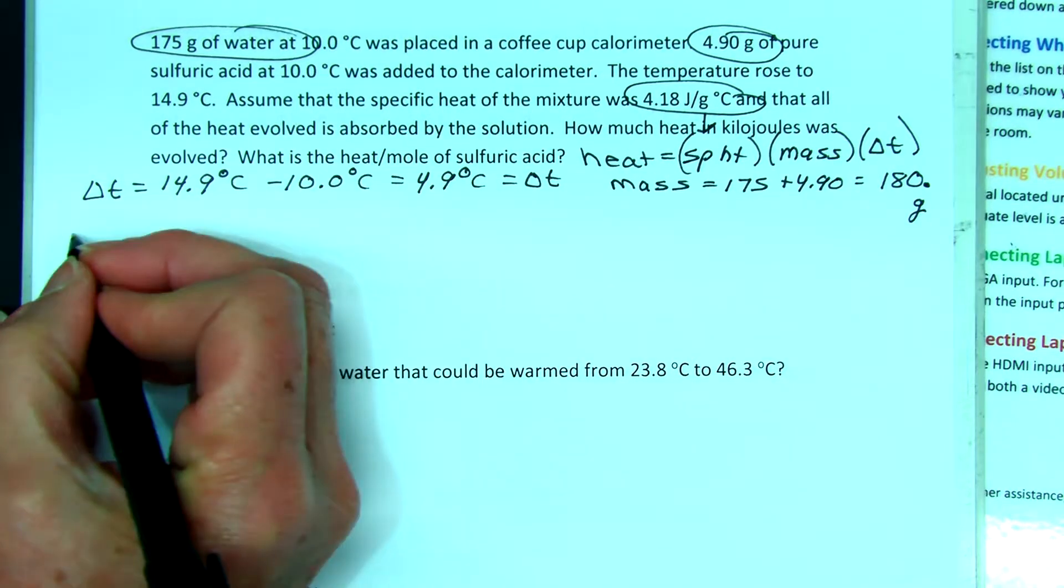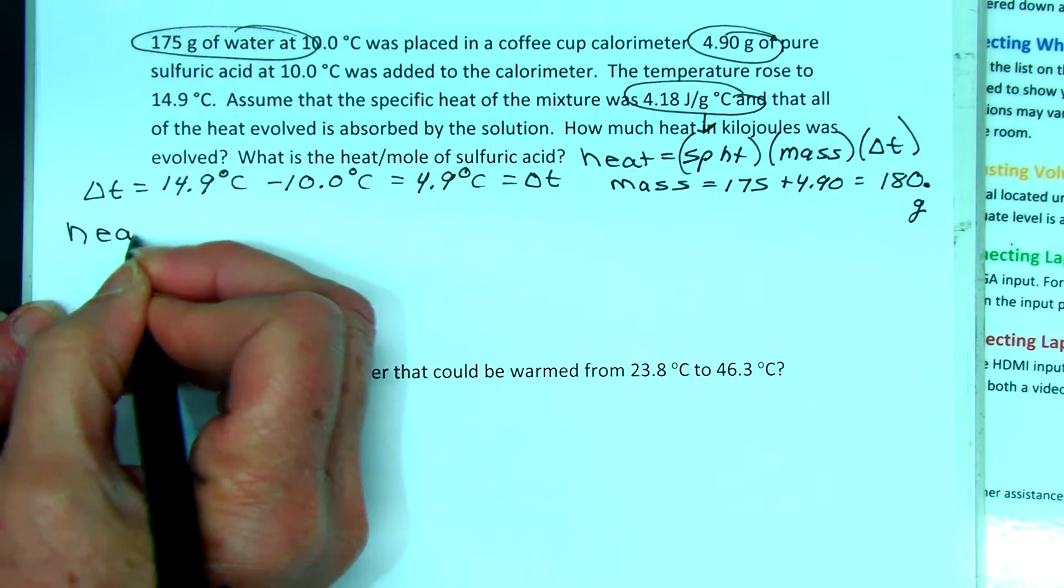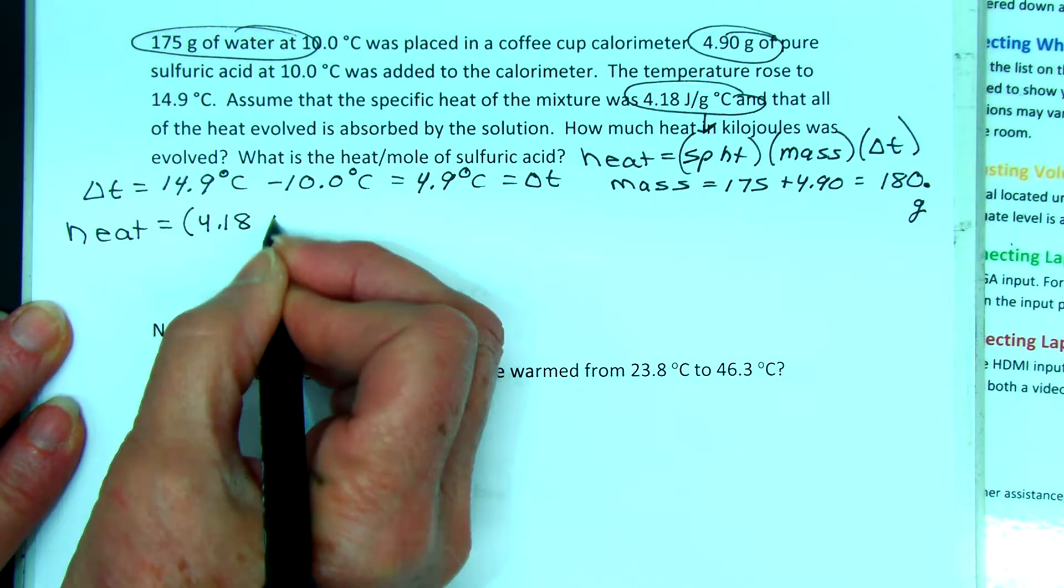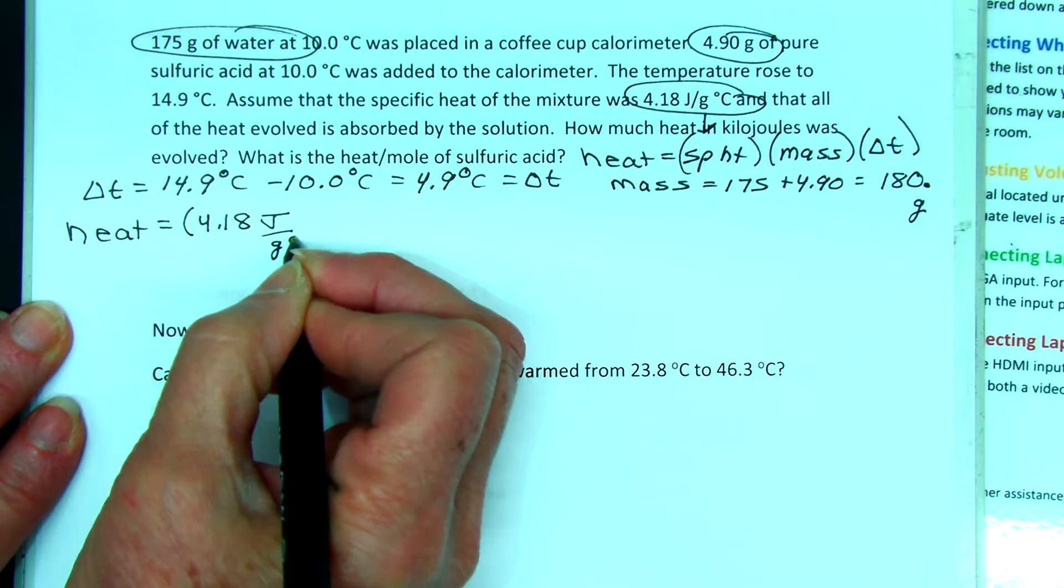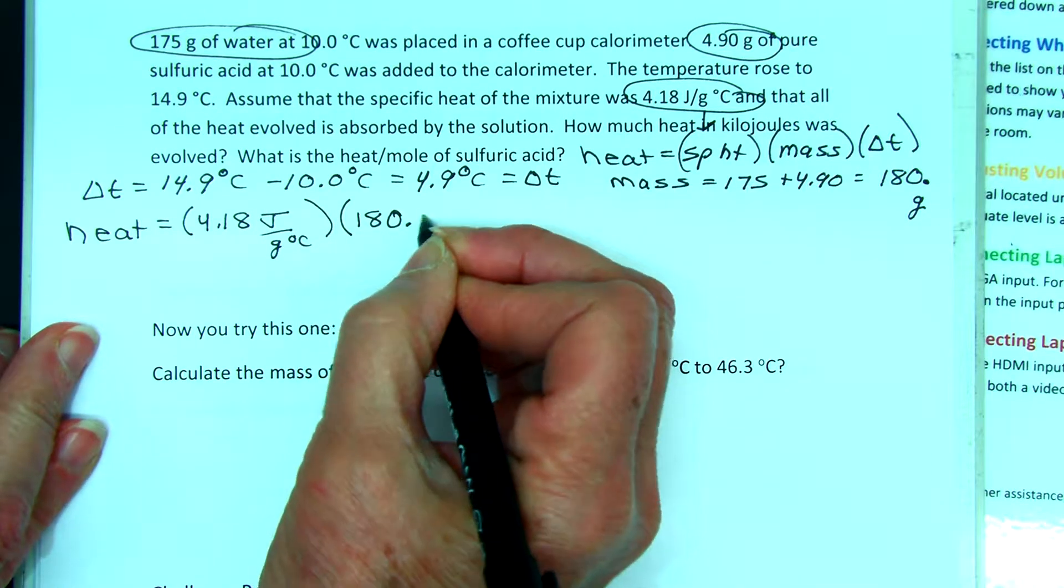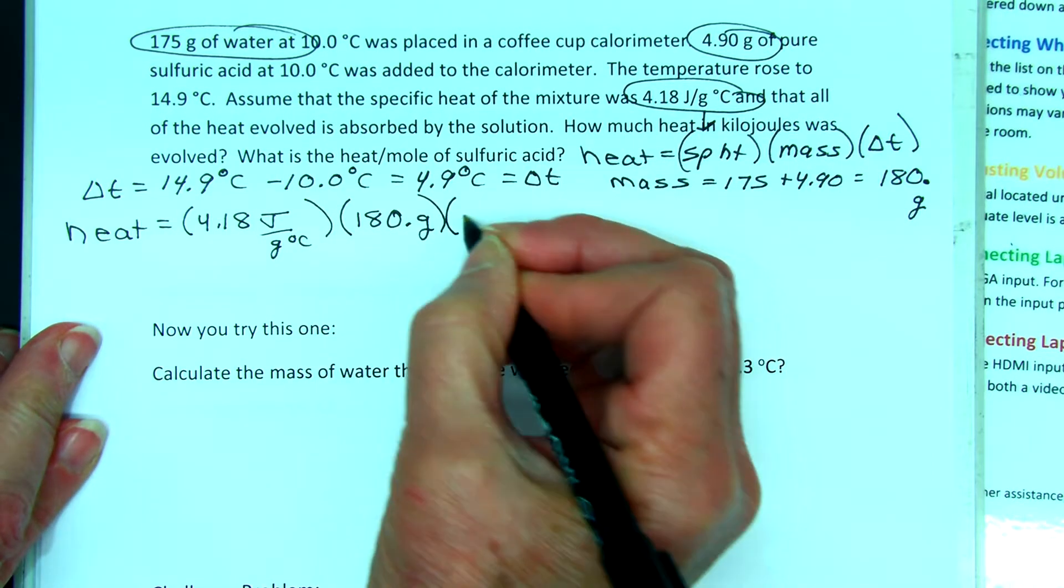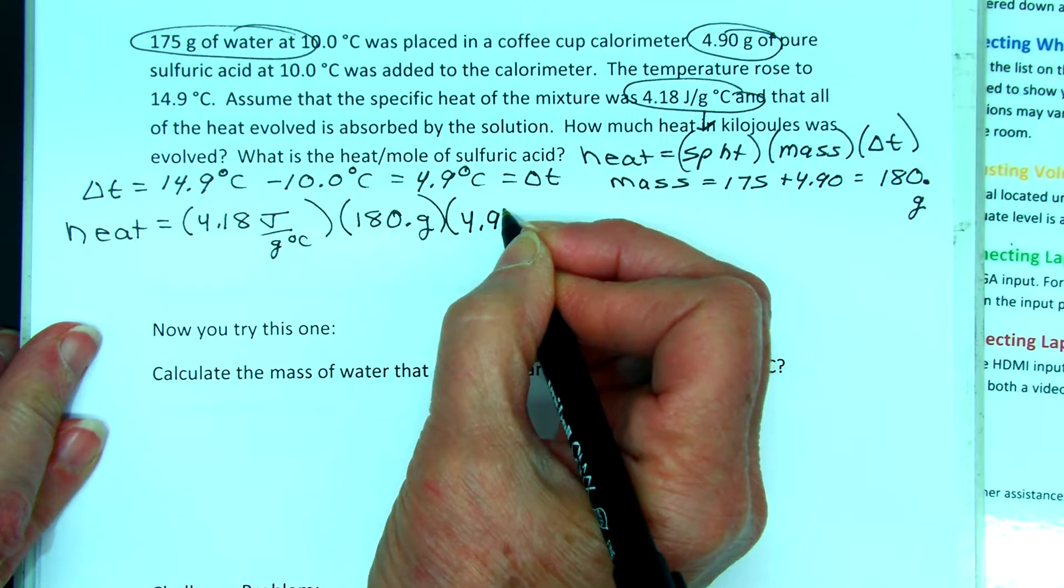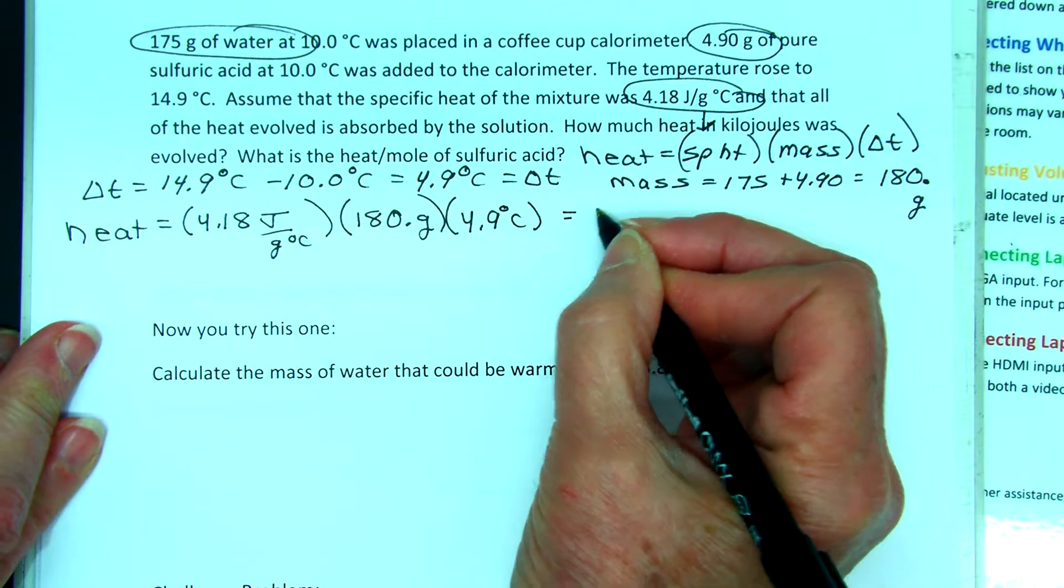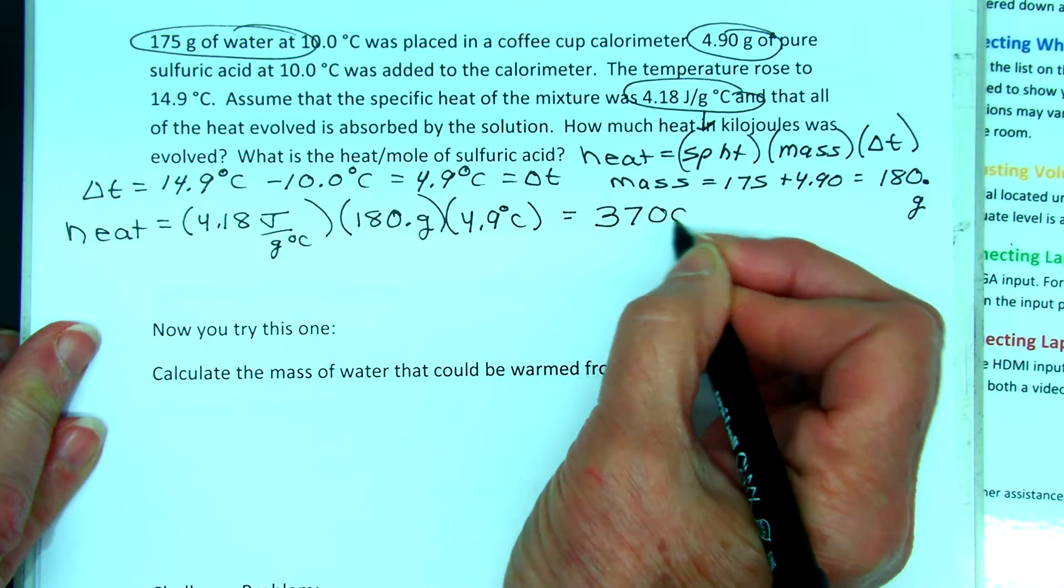Now we know that the heat is equal to the specific heat, 4.18 joules per gram degree C, times the mass, 180 grams, times the temperature change, 4.9 degrees C, is equal to 3,700 joules.